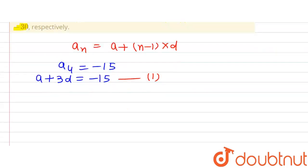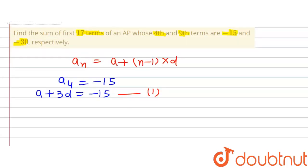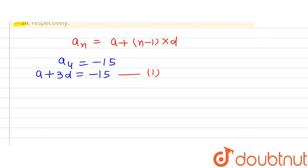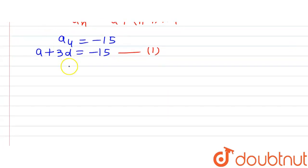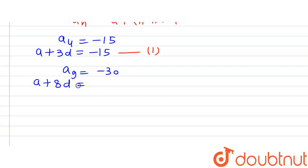The question further says that the 9th term is minus 30. Using the same formula for the 9th term: A + 8D = −30. This is our second equation.